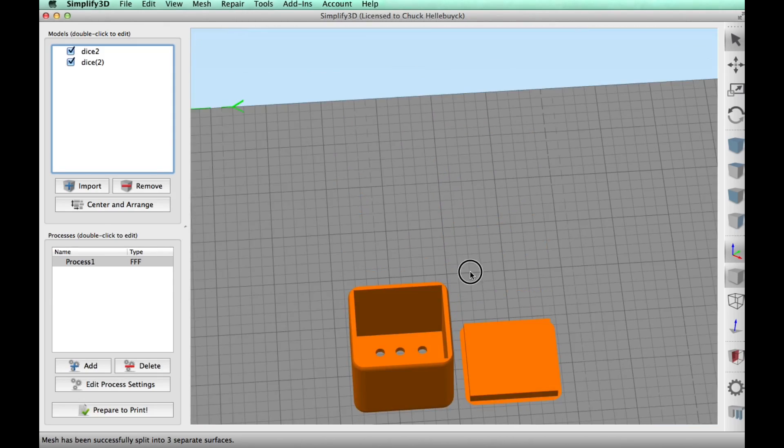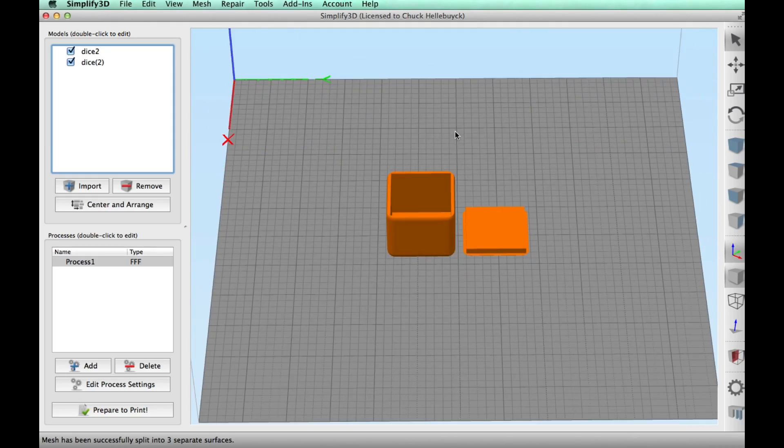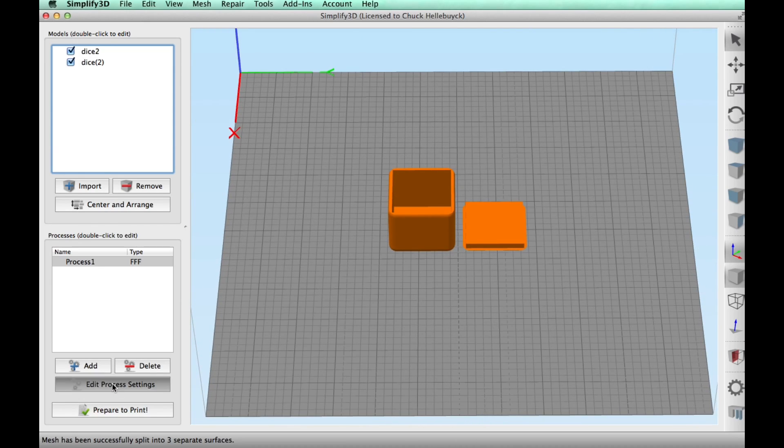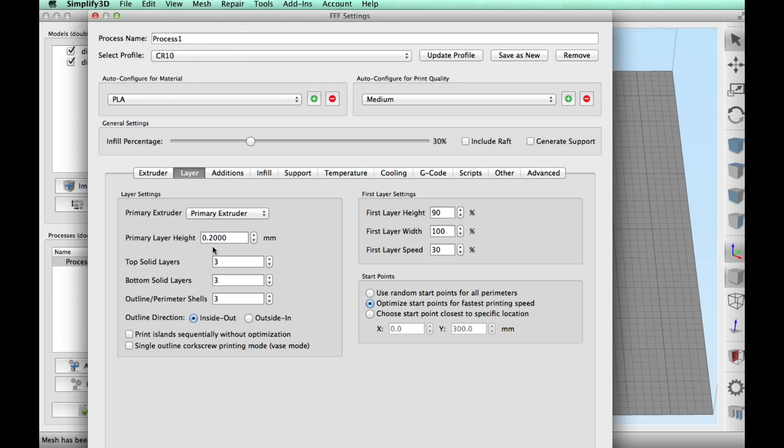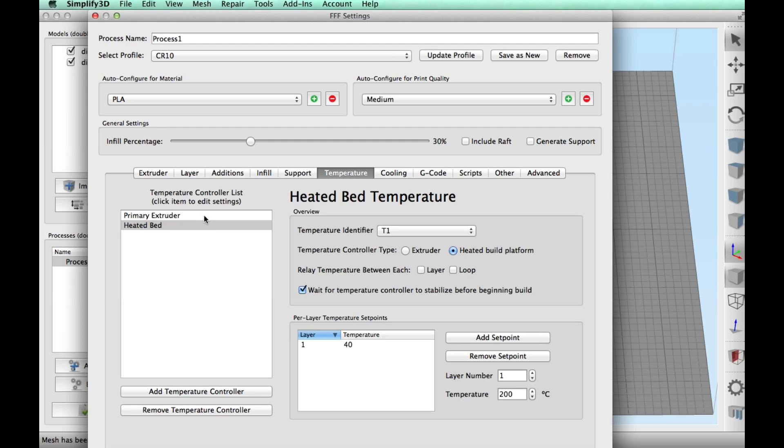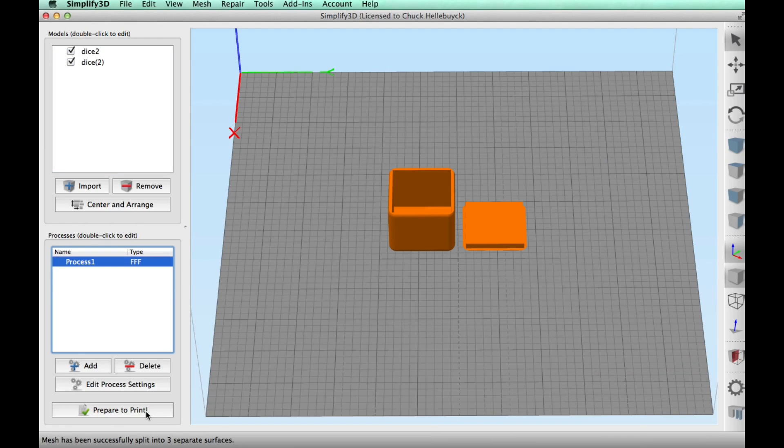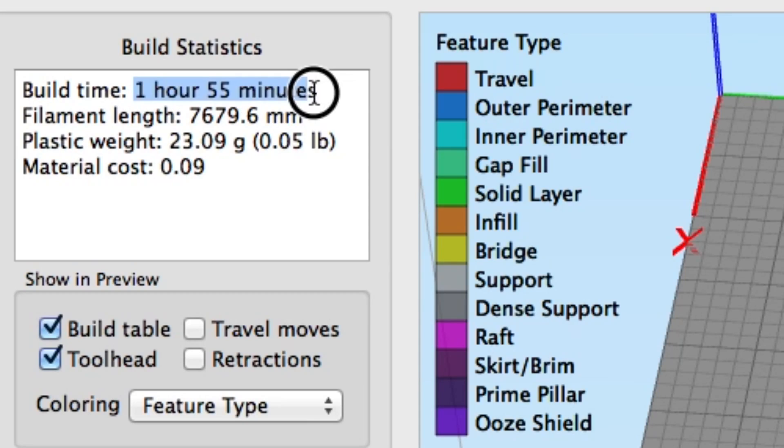I imported those two into Simplify3D and this is actually a very easy print. The cover actually ended up getting a little bit of a rough bottom on it. But the top came out really good. I was happy with it. I printed on my Creality CR10 at a 0.2 layer height. Three top and bottom shells. I did it at 215 degrees PLA, 60 millimeters per second. And it said it would take one hour and 55 minutes and just under eight meters of plastic.